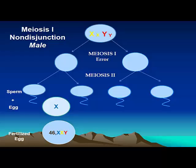If we have meiosis I errors in a male, we start off with XY. The DNA replicates, and they fail to divide — a meiosis I error. Then they go on to divide again, creating sperm that have an X and a Y chromosome in meiosis II. The sperm then fertilize an egg with an X chromosome, and the fertilized eggs all have 47 XXY.